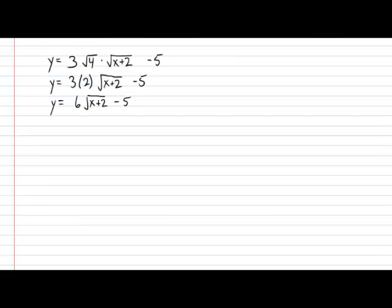I want you guys to try an example on your own. Suppose I give you the rule: Y equals negative 0.5 multiplied by the square root of 0.04X plus 8, and plus 2. This is not in proper format, so I want you to put it into proper format. Go ahead, pause the video, and try it now.